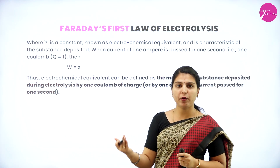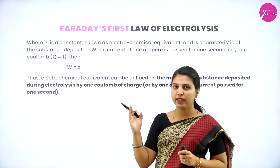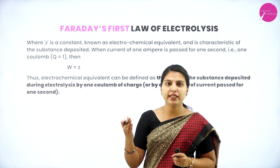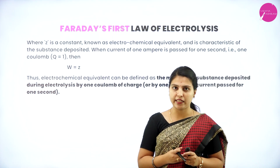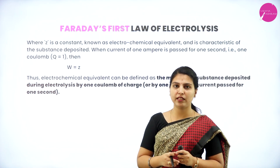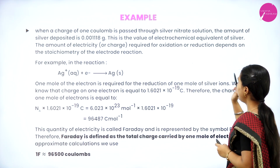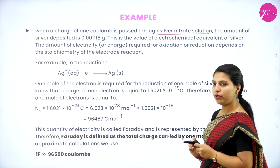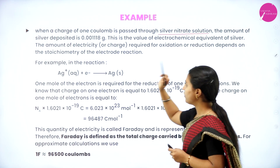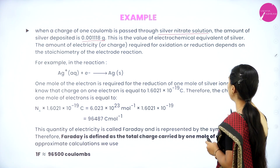The mass of substances liberated, deposited, or dissolved at the electrodes is directly proportional to the quantity of electric current passed. So W ∝ Q, Q = I × T (amperes × seconds), and W = Z × I × T, where Z is the electrochemical equivalent. For example, when a charge of 1 coulomb is passed through silver nitrate solution, the amount of silver deposited is 0.001118 grams — this is the electrochemical equivalent of silver.